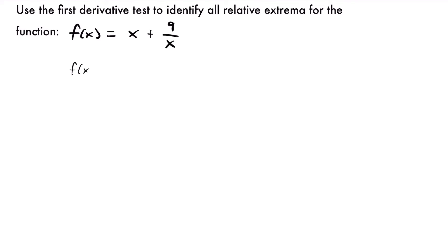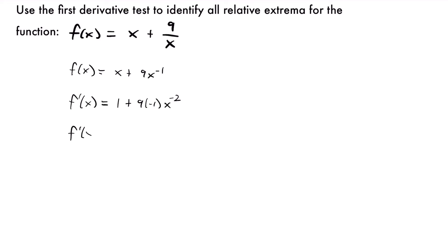We'll rewrite it as f of x equals x plus 9 times x to the negative first power. That's going to help us take the derivative using the power rule. So f prime of x is going to be equal to 1 plus 9 times negative 1 times x to the negative second power, because we subtract 1 from the exponent. Simplifying, our derivative will be f prime of x equals 1 minus 9 divided by x squared.